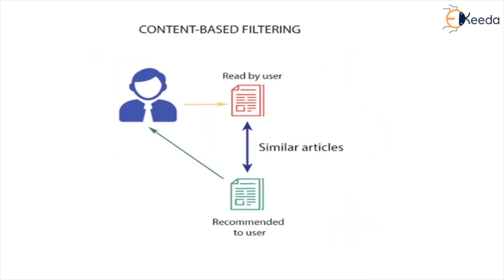Let's understand content-based filtering using an example. Suppose a user is reading a book which is based on history — similar history books are then recommended to the user. This is known as content-based filtering.